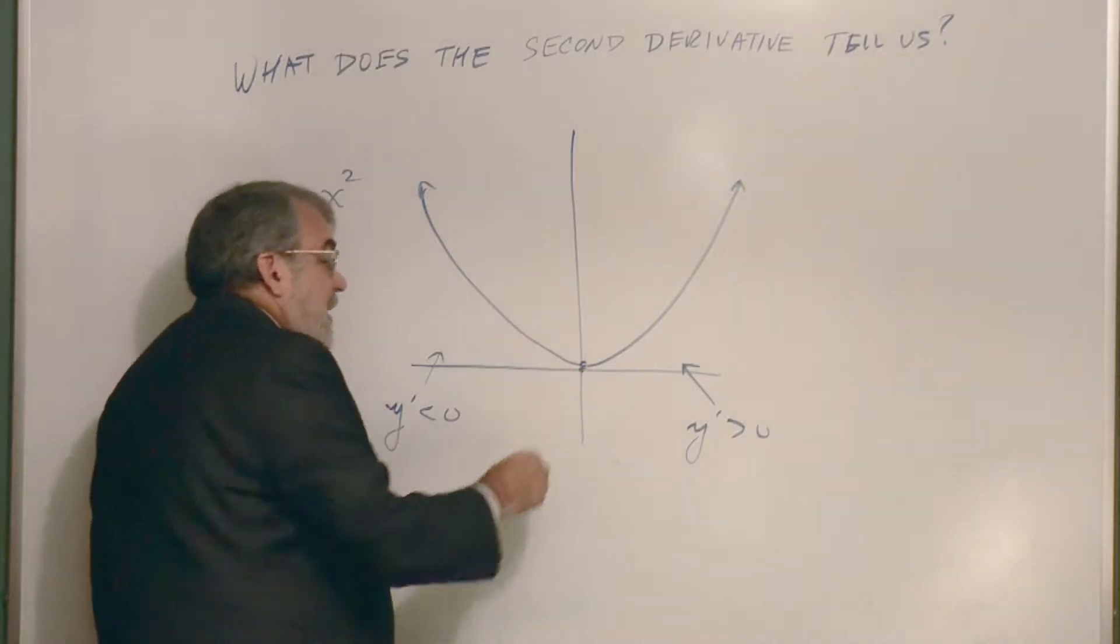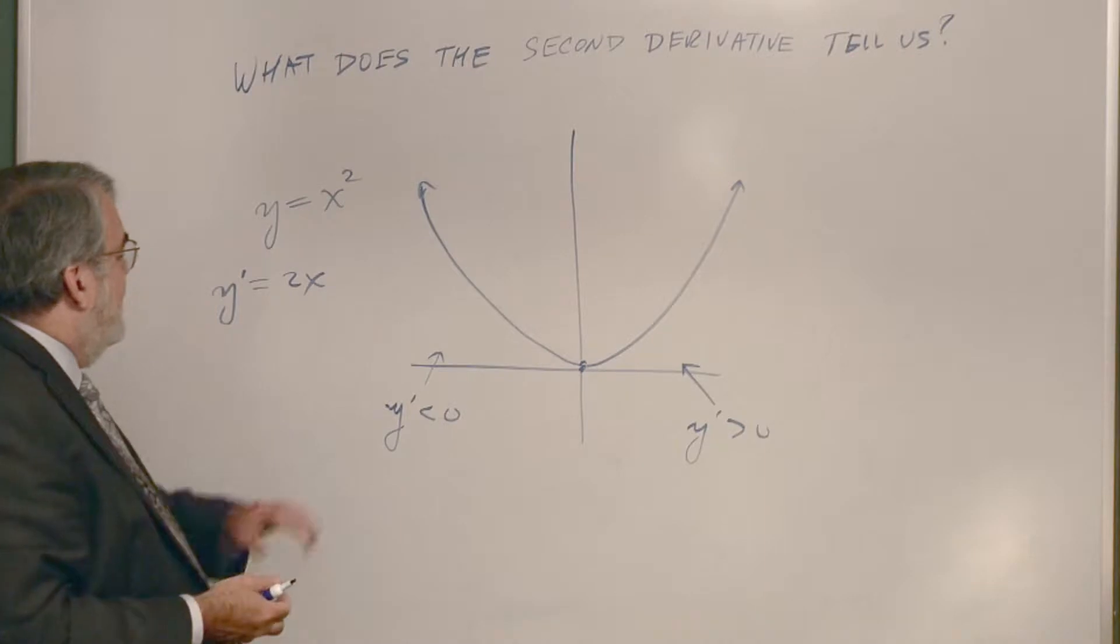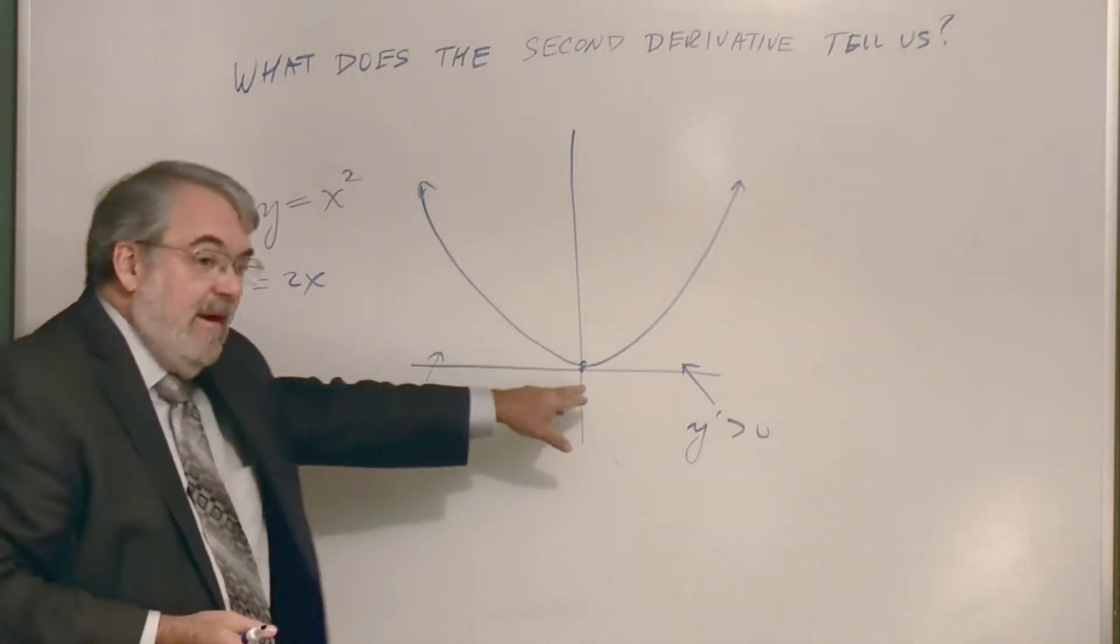Now down here is where it kind of turns the corner at the vertex. And in fact, if you set this equal to 0, x will be 0.